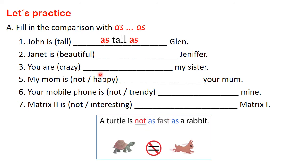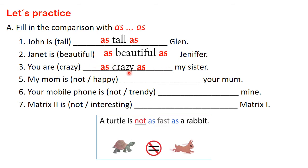Let's see. John is as tall as Glenn. John es tan alto como Glenn. Janet is as beautiful as Jennifer. Janet es tan hermosa como Jennifer. You are as crazy as my sister. Tú estás tan loco o loca como mi hermana. My mom is not as happy as your mom.